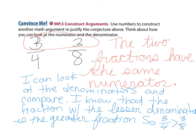And here's how I write it out in words. I can look at the denominators to compare. Since I know that the fraction with the lesser denominator is the greater fraction, I know that three fourths is greater than three eighths.